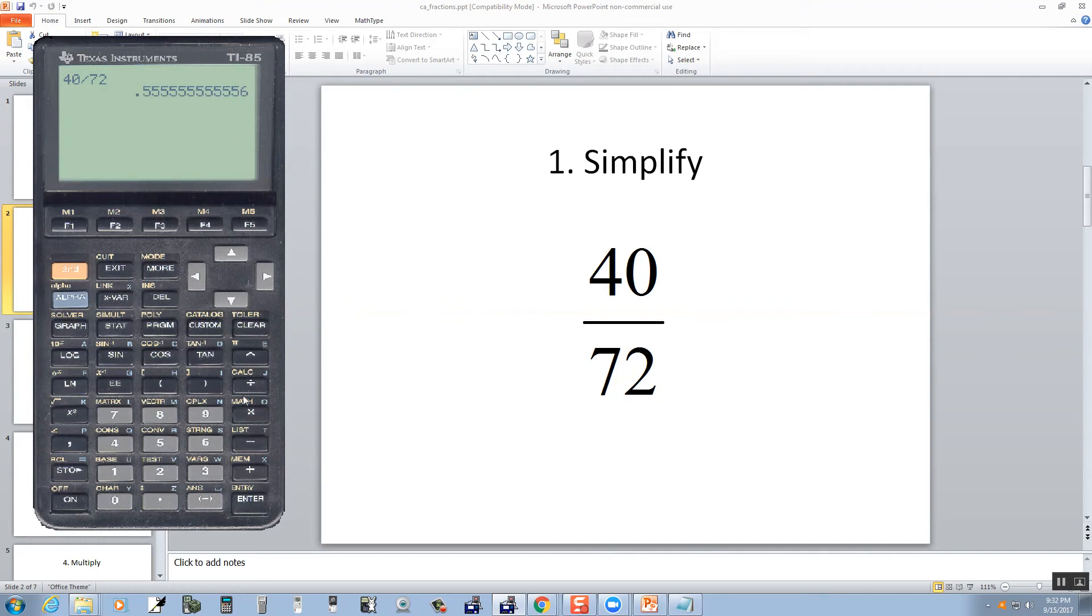Now how we're going to change that to a fraction is we'll push our second button right here, and then we want to go into the math. That's where the multiplication is. So I push the multiplication button. Now this menu will pop up, and I want to choose the miscellaneous. So I'll push the button straight below it, this F5.